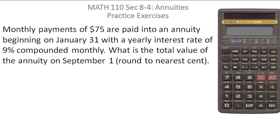Monthly payments of $75 are paid into an annuity beginning on January 31st with a yearly interest rate of 9% compounded monthly. What is the total value of the annuity on September 1st? And we want to round our final answer to the nearest cent.